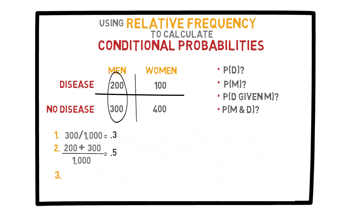Now let's deal with the conditional probability. Given that the person is a man, what is the probability that he has the disease? Well, we are only dealing with the left-hand column, so it is out of 500 people. 200 of the men have the disease, so it is 200 divided by 500, which is 0.4. Finding conditional probability is very easy when working with organized tables such as this one.